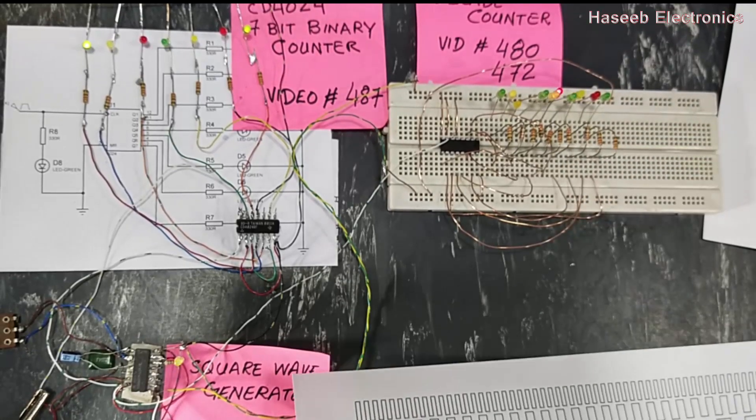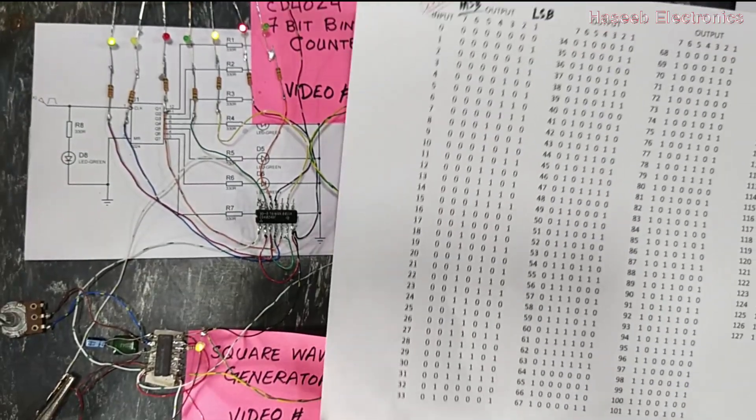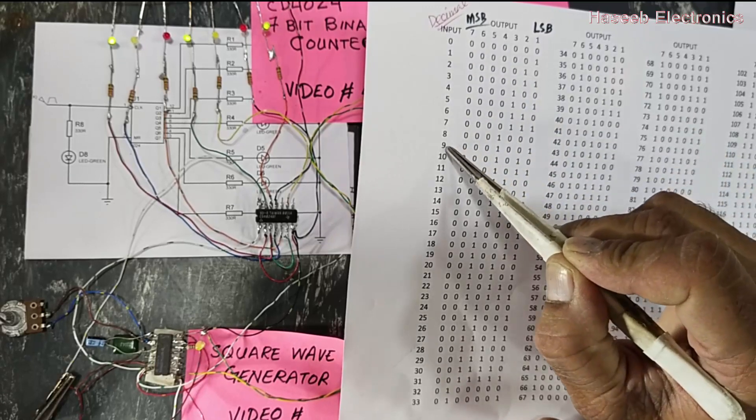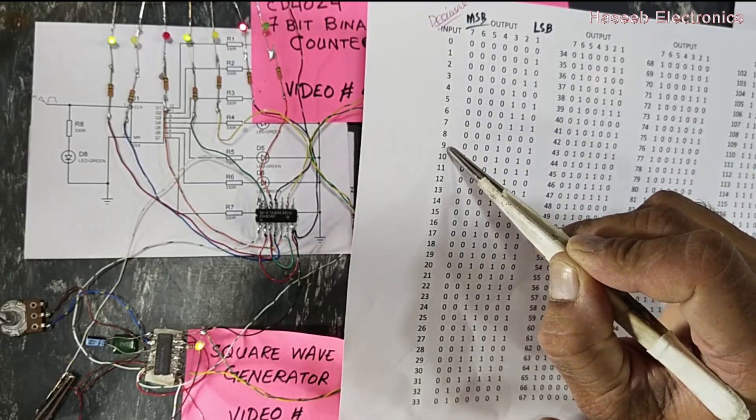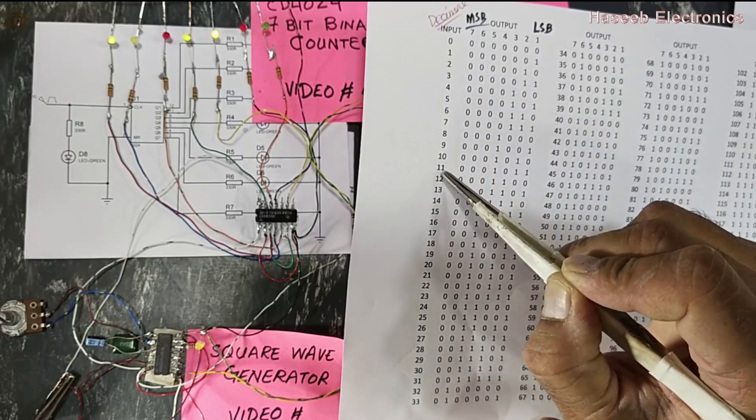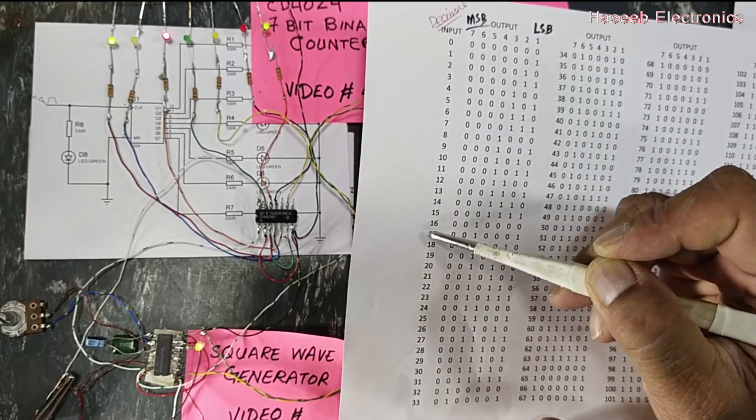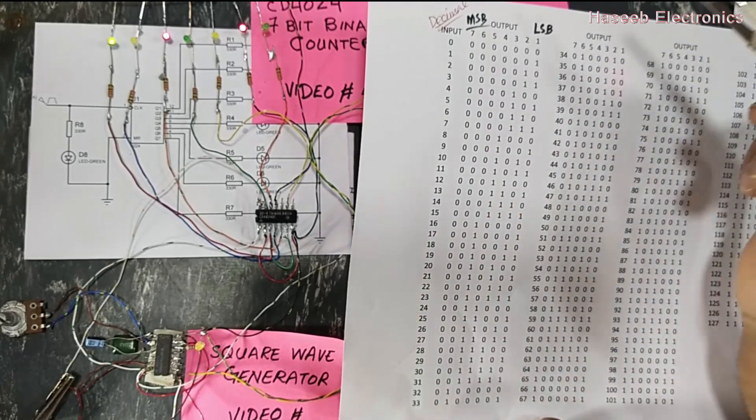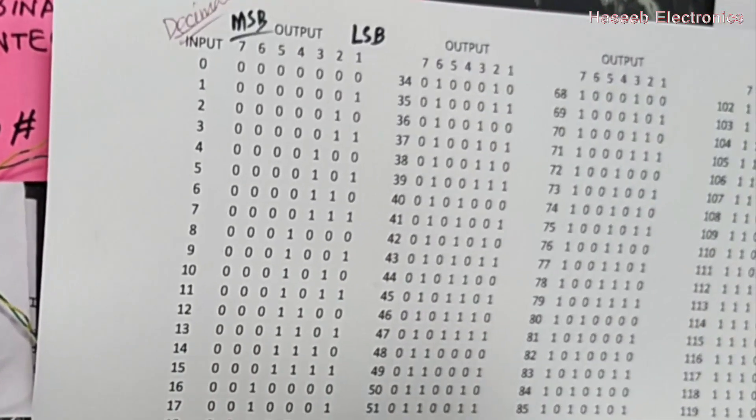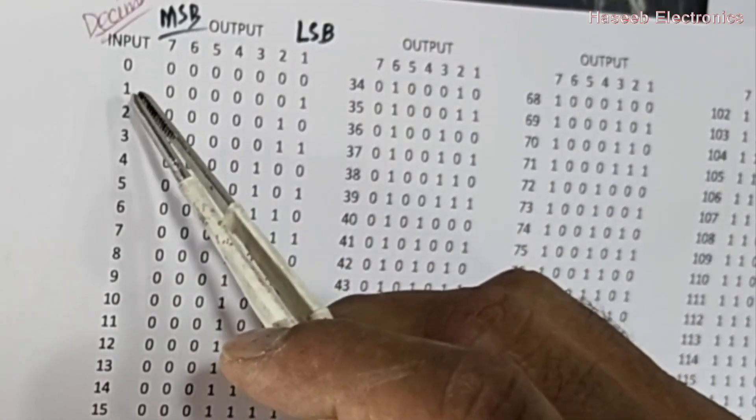Now if we see the CD4024, it is a binary counter. We use decimal system in our routine life - decimal is from zero to nine. After nine we use combinations like one zero, then one one. We make combinations from these digits for counting.